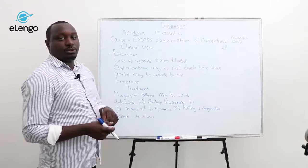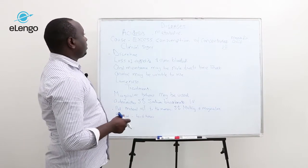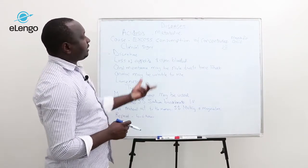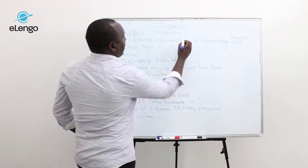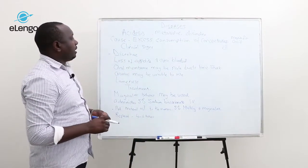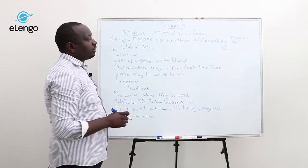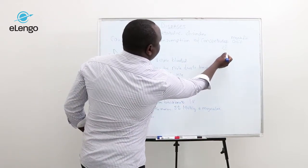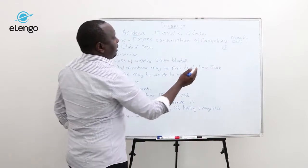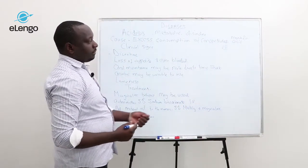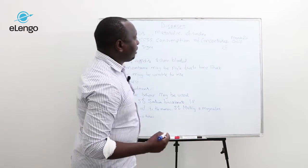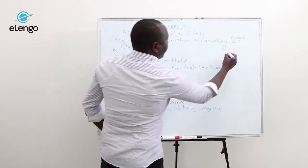The next disease is acidosis, a metabolic disorder caused by increase in rumen pH as a result of breakdown of excess carbohydrates in the rumen. This increases the rumen pH or acidity to about 5.5, which is very high.